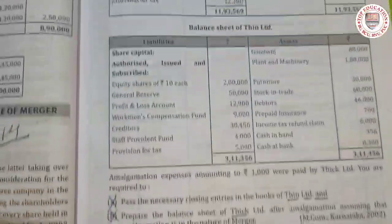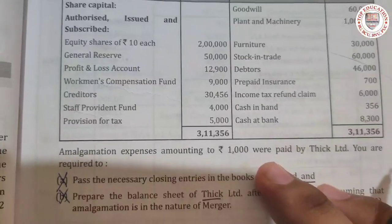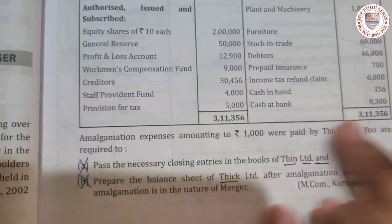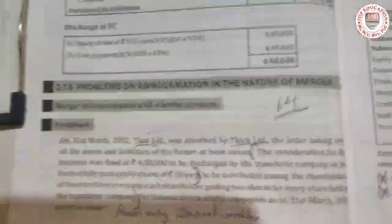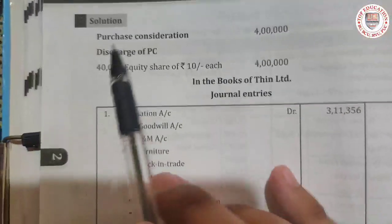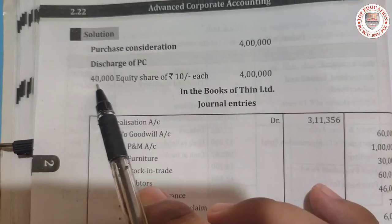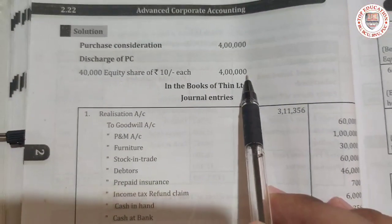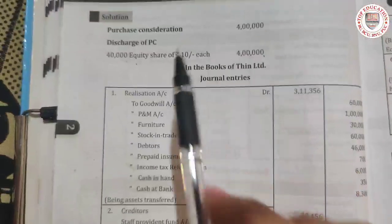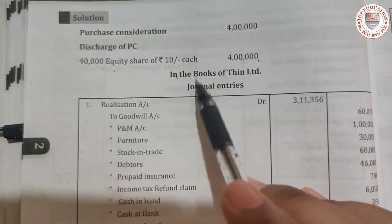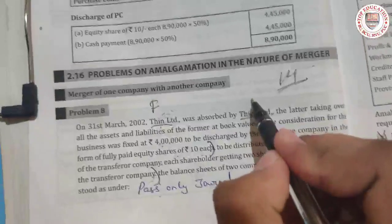Amalgamation expenses amounting to rupees 1,000 were paid by Thick Limited. You are required to pass only journal entries. For purchase consideration: the discharge amount is 4 lakh — that is 4,00,000 divided by 10 — so 40,000 equity shares of rupees 10 each. Now in the books of Thin Limited, Thin Limited is the first company being absorbed.